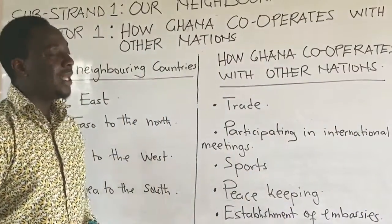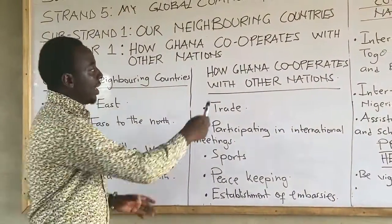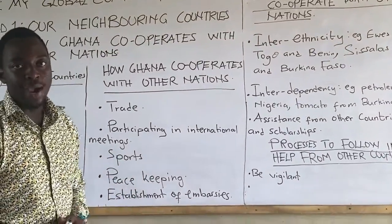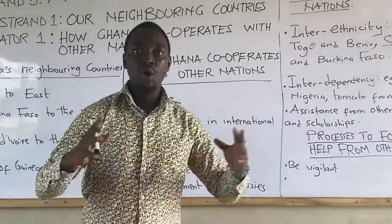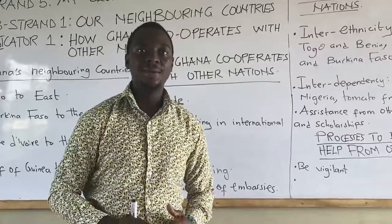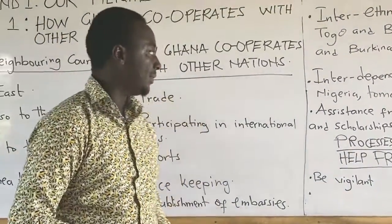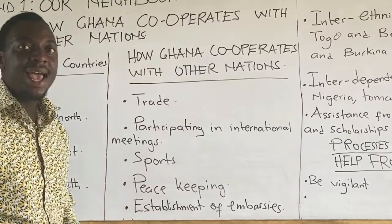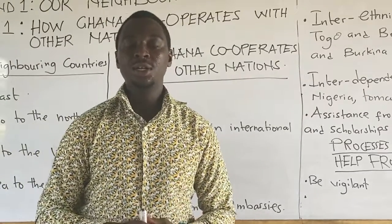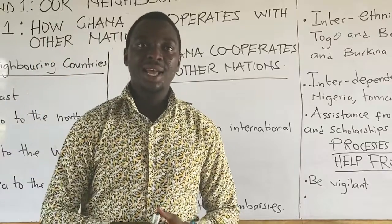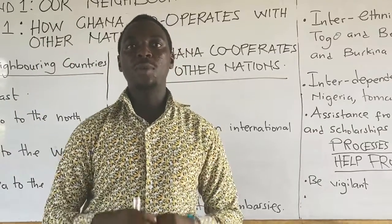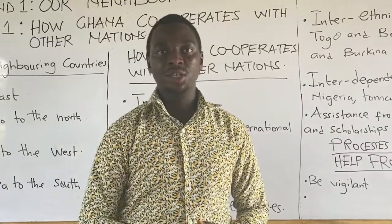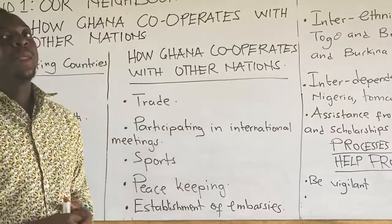Now let's look at how Ghana cooperates with other nations. The first point is through trade. Ghana exports some goods and commodities to other neighboring countries, and Ghana also imports goods from other neighboring countries — both close neighbors and distant neighbors. Through trade, Ghana cooperates with other nations.